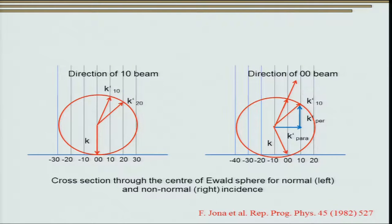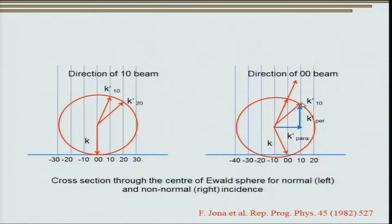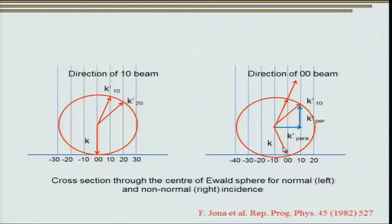Talking about how diffraction occurs in 2D, this is just an extension from the earlier figure. There are two conditions in low energy electron diffraction: normal incidence, where the incident wave is perpendicular to the lattice at 0,0,0, and non-normal incidence. If the incidence is not normal, we do get diffraction, but this diffraction component can be classified into a parallel component — parallel to the surface — and a component perpendicular to the surface.